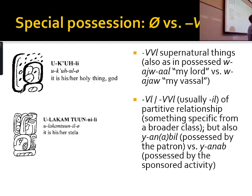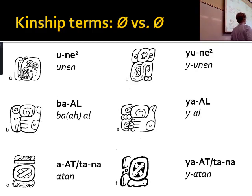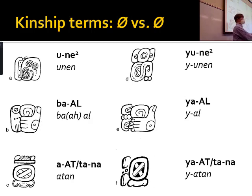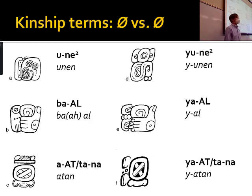Kinship terms have no markers whether they're possessed or unpossessed in the language of hieroglyphic inscriptions — they're all the same whether used alone or with a possessive prefix. For example, 'yal' — child of mother — and 'bal al' — mother's child, like 'mommy's boy.' 'Aton' — spouse, wife; 'yatan' — his or her wife. 'Unen' — child of father. We see names like 'yushunen balam' — Lady Child-of-Father Jaguar — but it's more like 'baby jaguar.'